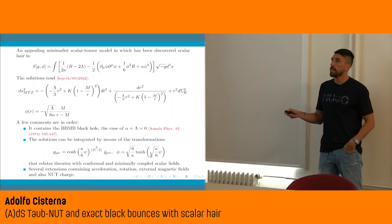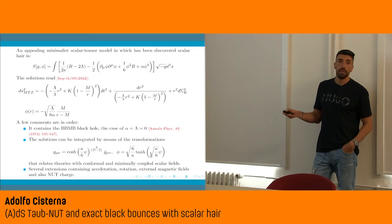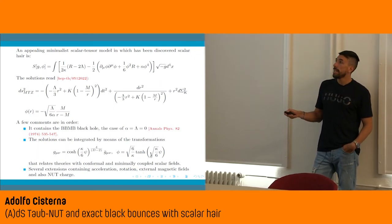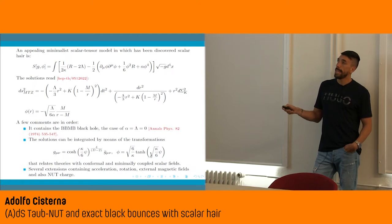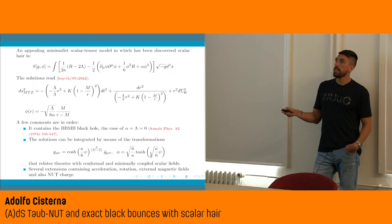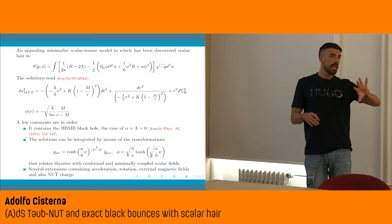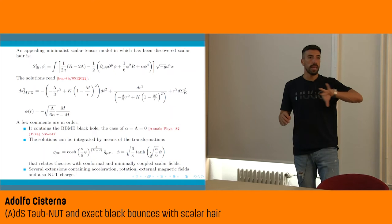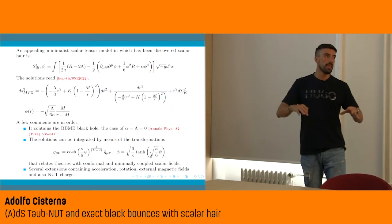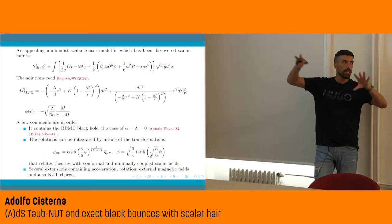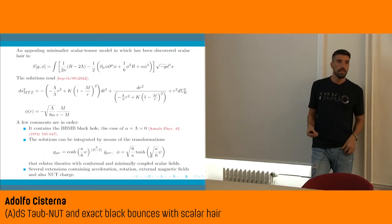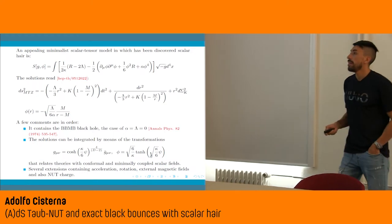Notice that the scalar field seems to explode — it has a singularity at r = m. Nevertheless, if you compute the horizons for this metric, you see that this conflictive point lies behind the horizon. So in the domain of outer communications, the spacetime and the scalar are regular.